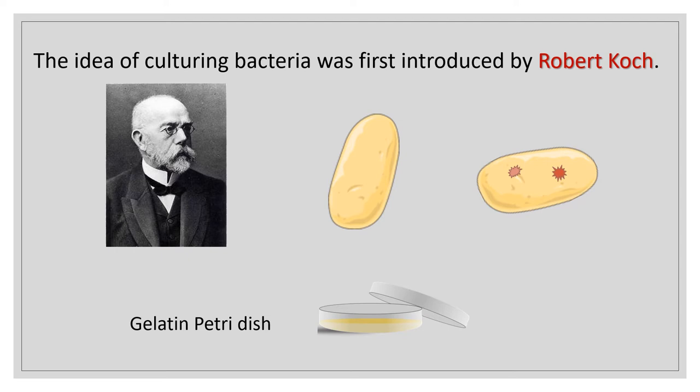The idea of culturing bacteria was first introduced by Robert Koch. He used fresh, clean, boiled, and sterile potato to grow bacteria, but it was not ideal as bacteria do not grow well on potatoes. He then used gelatin on sterile dishes, but that too was not a complete success, as gelatin was easily consumed by unwanted bacteria and melted at low temperature.